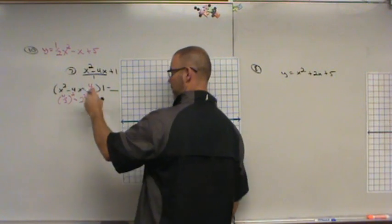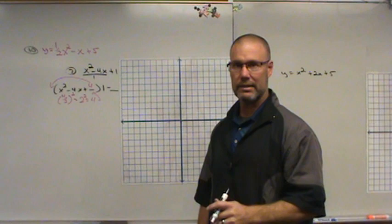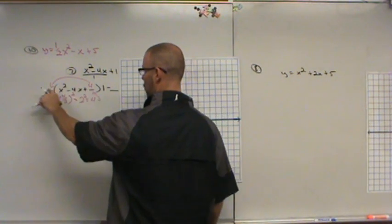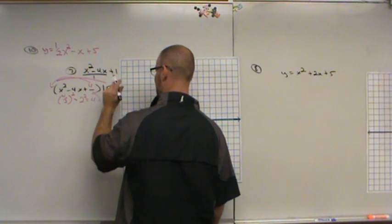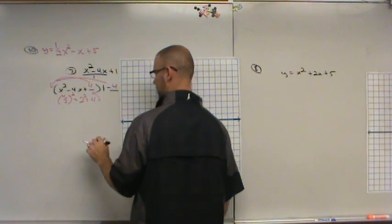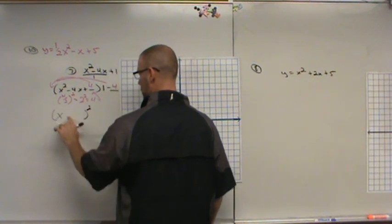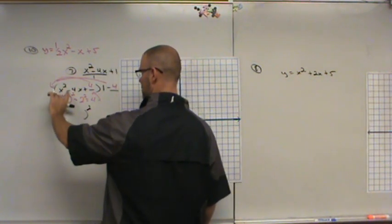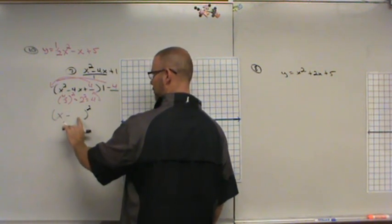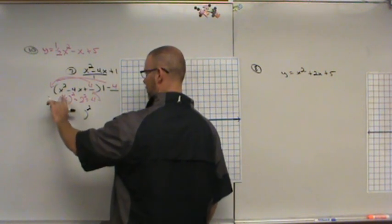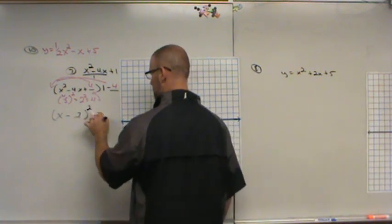I'm really adding four. So if I'm really adding four, what am I subtracting? Well, I have to multiply that four times that A value, which is one, to tell me how much I really have to subtract. Now I can write it as a product of squares. X plus or minus something squared. Go back to the sign in between the first two numbers. It's minus. The H value becomes what I took half of. It's half of my B value, which is two. And one minus four is negative three.